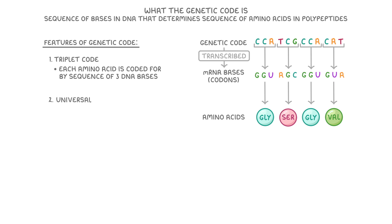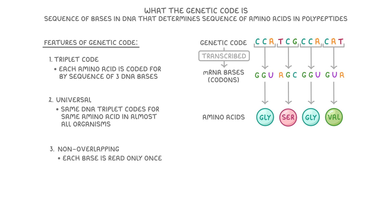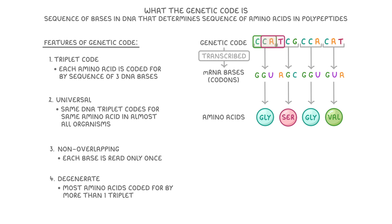The second feature is that it's universal, which means that the same DNA triplet codes for the same amino acid in almost all organisms. Third, it's non-overlapping, meaning each base is read only once. So for our example here, these first few bases would be read as CCA-TCG, and not CCA-CAT. Then fourth, it's degenerate, meaning most amino acids are coded for by more than one triplet. For instance, the DNA sequences ACA and ACG both code for the amino acid cysteine.